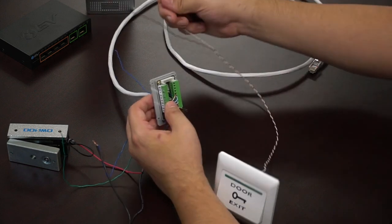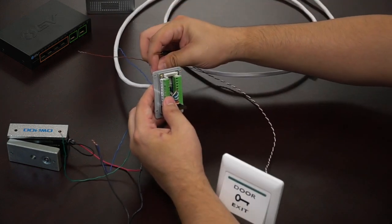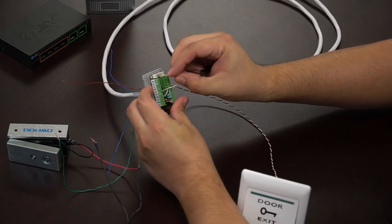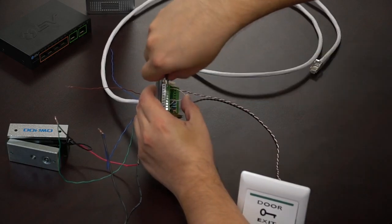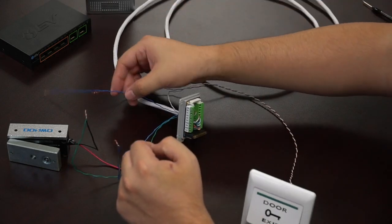And after we get that screwed down, we're going to go ahead and take our switch and thread one of the wires into the GDS punch block, and we're going to be connecting that into the N1 plus.